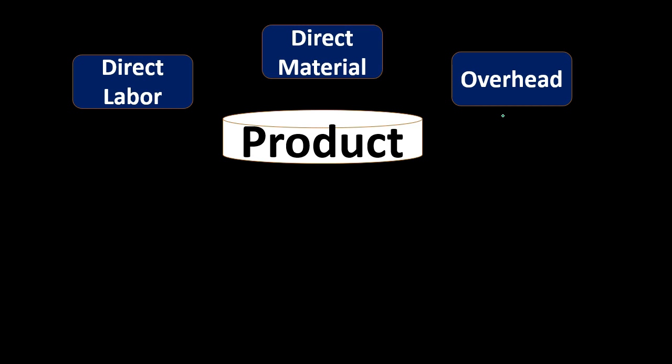Then we have this bucket of overhead — the most confusing bucket — and those are going to be things that we cannot apply directly to a specific unit. For example, if we're making custom guitars, things like glue are so small that we don't want to apply the cost directly; it would take too much time to track the amount of glue used per guitar. So we put it into overhead and then find some type of cost allocation method to allocate it out.